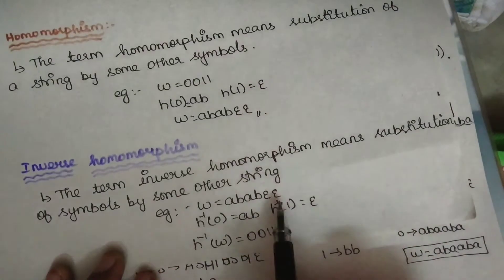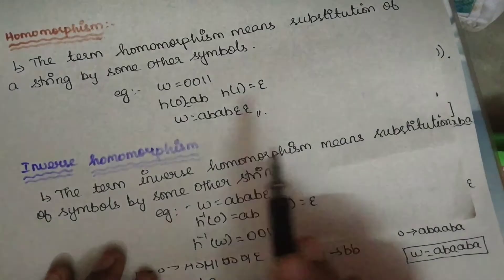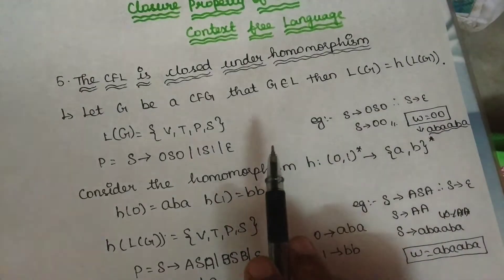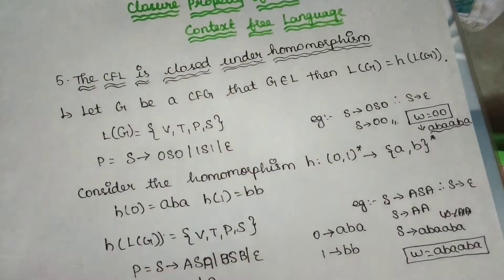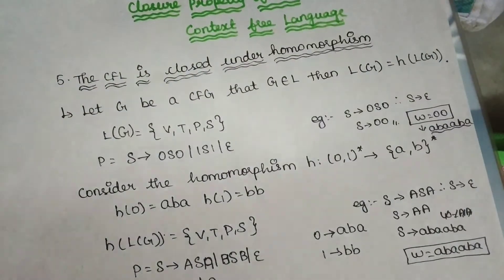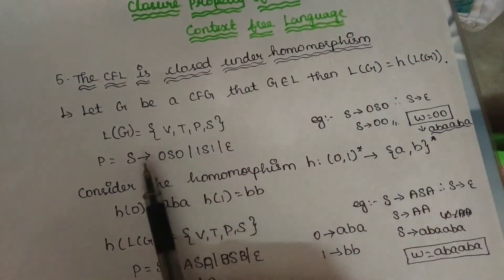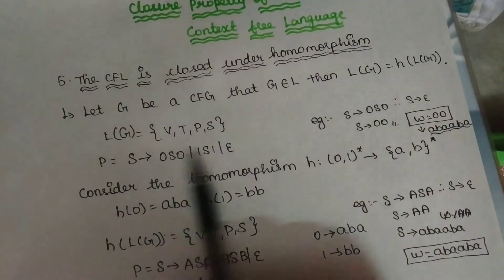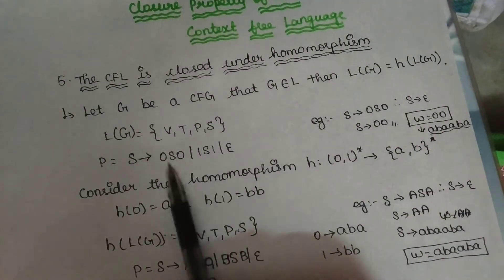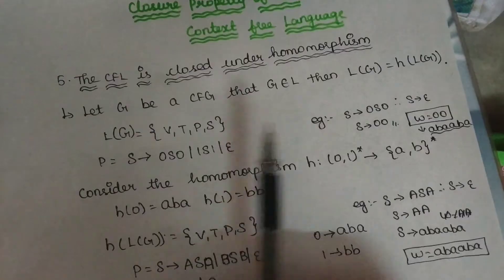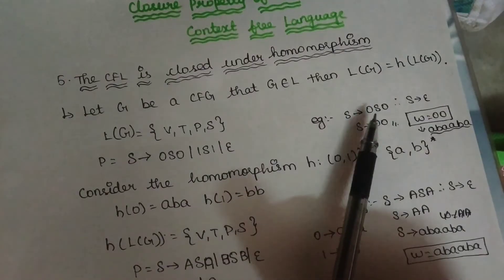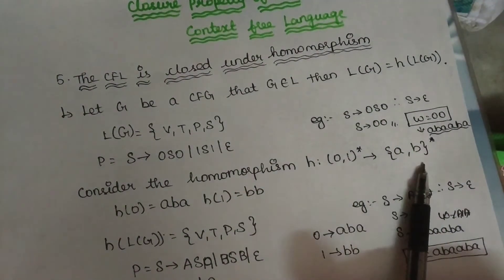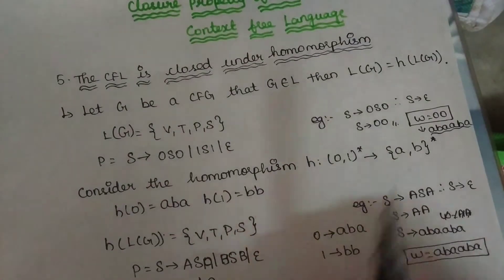If you have a homomorphism or inverse homomorphism, these are the same operations and context-free language is supported under them. That is the same example. Let's look at this example — I am going to take a language. This is the production rule. It will apply homomorphism — that is still a context-free language.